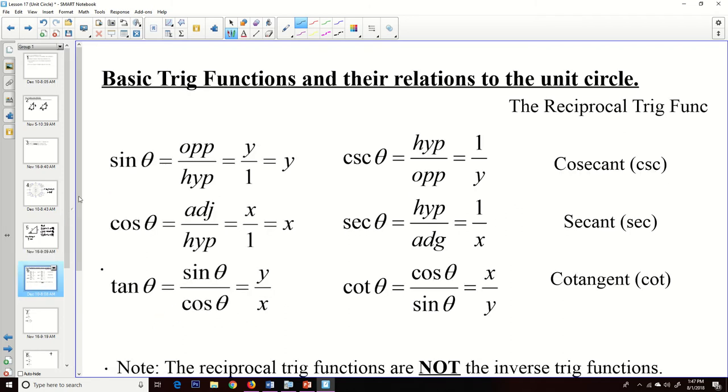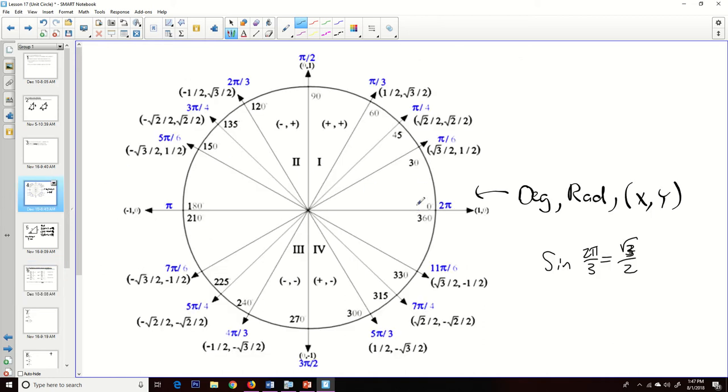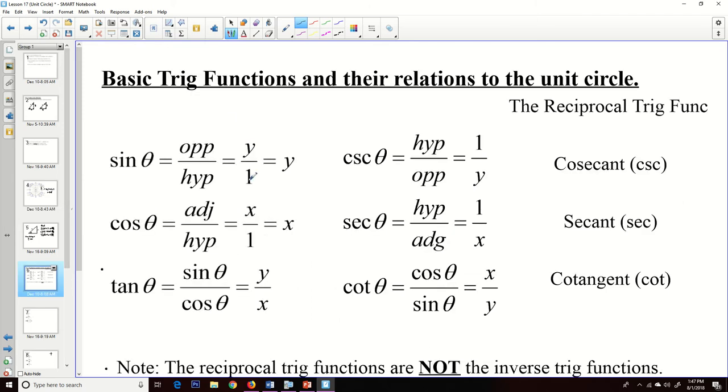And so what happens to that is whenever you have a fraction that has a 1 on the bottom, you're just going to write it as whatever that numerator value is. So what happens here is when I talk about the sine of some theta that's on the unit circle, it's the opposite side over the hypotenuse. The opposite side in a right triangle that's on this unit circle is the y value. And so when you put that y value over 1, then it just reduces down to y. So the sine of a theta value is the y value at that angle measure.